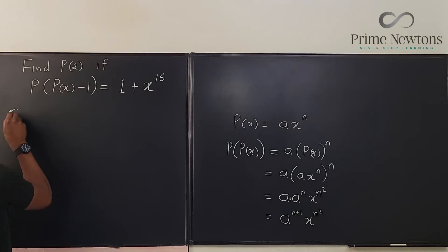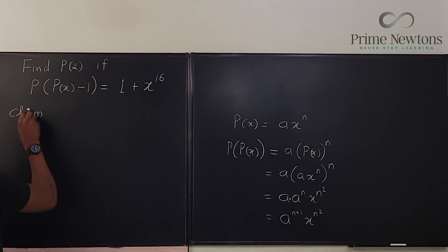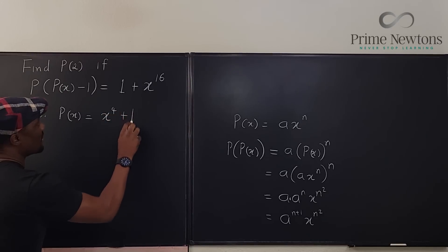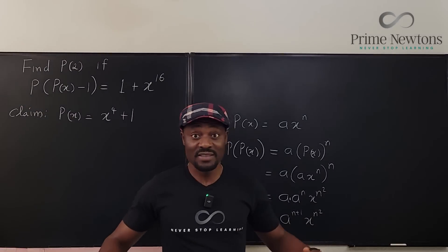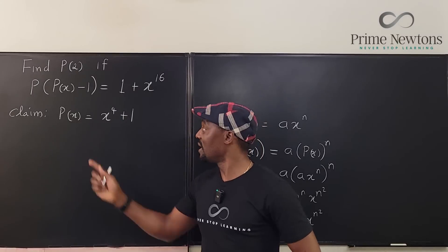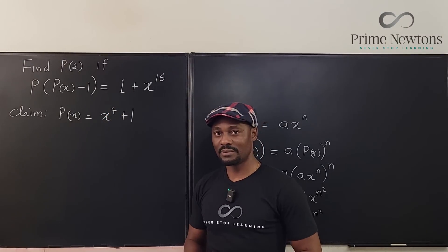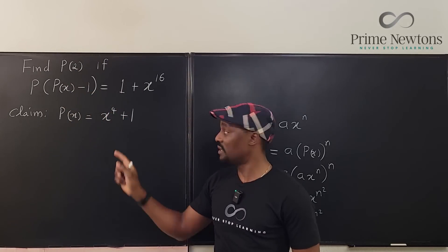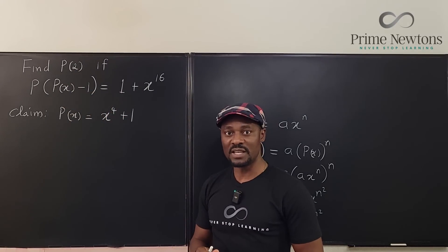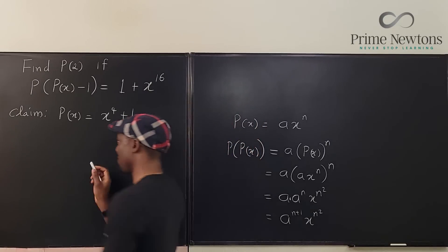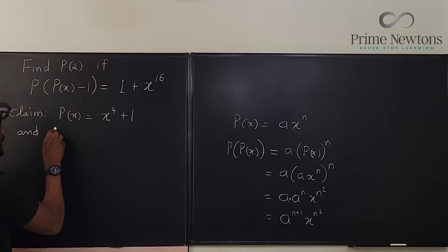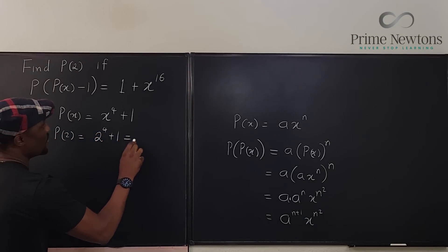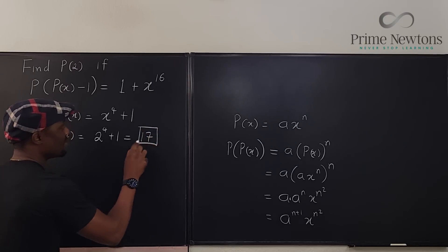My claim: the original polynomial is p of x equals x to the fourth plus 1. If you plug in 2, you get 2 raised to the power of 4, which is 16 plus 1, equals 17. So p of 2 equals 17. That's the final answer.